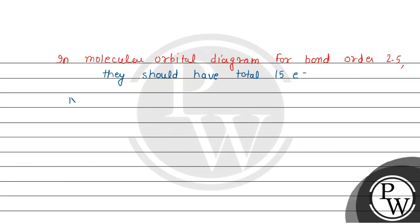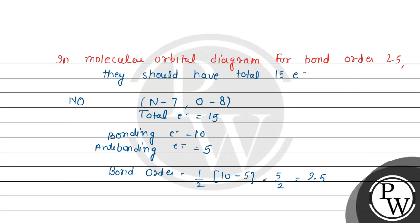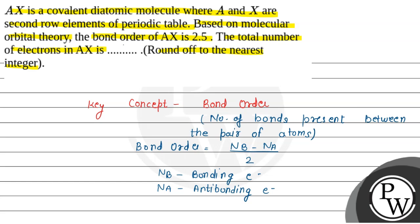This compound is NO because nitrogen is 7 and oxygen is 8, so total electrons here will be 15. If we calculate bond order, then bonding electron is 10 and anti-bonding electron is 5. So this bond order is 1 by 2, 10 minus 5, 5 by 2 is 2.5. So total number of electrons is 15.